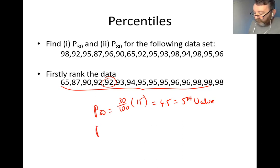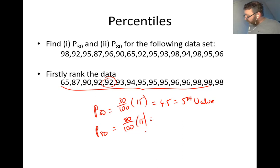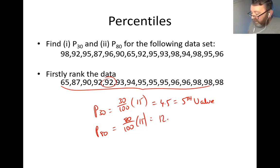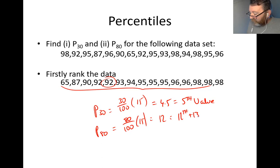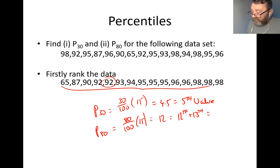What about P80? P80 is 80% of the 15 data points. 0.8 × 15 = 12 — a whole number. Because the result is a whole number, I take the 12th and the 13th values and find their mean. Counting through the ranked data to positions 12 and 13, the value in the middle of those two is 97.